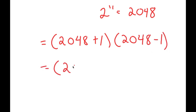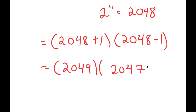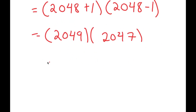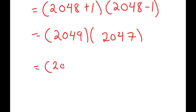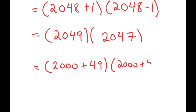Now, 2048 plus 1 is 2049 and 2048 minus 1 is 2047. So I get 2049 times 2047. A simpler way of multiplying this rather than the usual method — that way takes too long — is to rewrite this as 2000 plus 49, times 2000 plus 47.